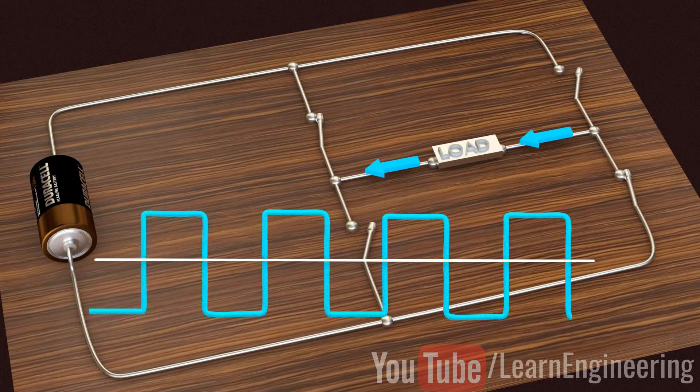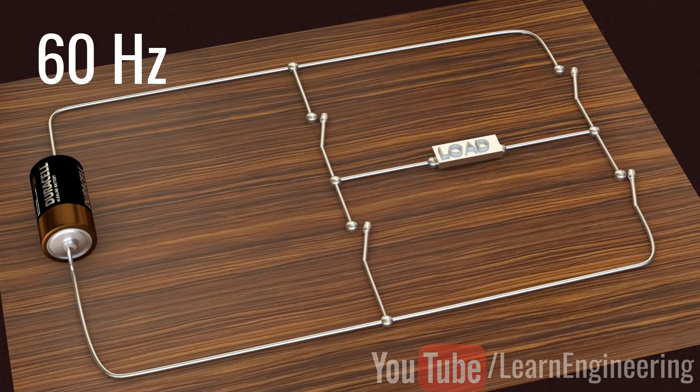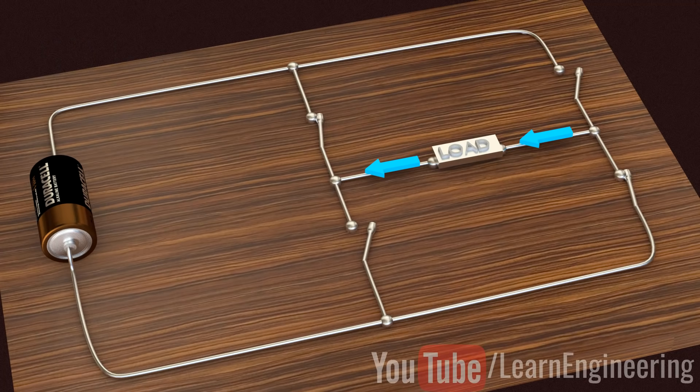We all know that the frequency of the AC supply available in our homes is 60 Hz. This means that we need to turn the switch ON and OFF 120 times in a second, which is not possible, whether manually or by using mechanical switches.